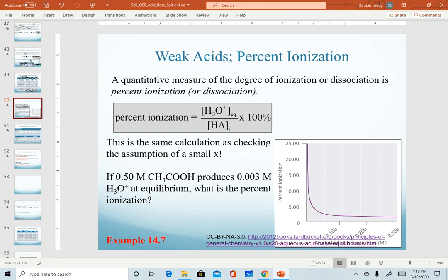Another quantity that can help determine how strong or weak an acid is, is a quantity called the percent ionization. And this is a calculation that essentially tells us the degree of ionization or dissociation. And our equation for it would be calculated.